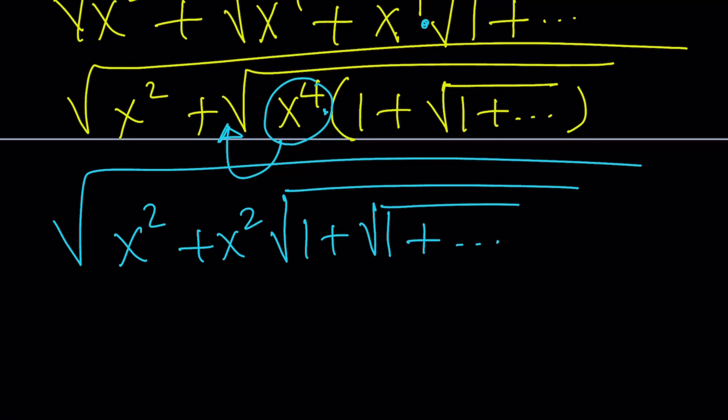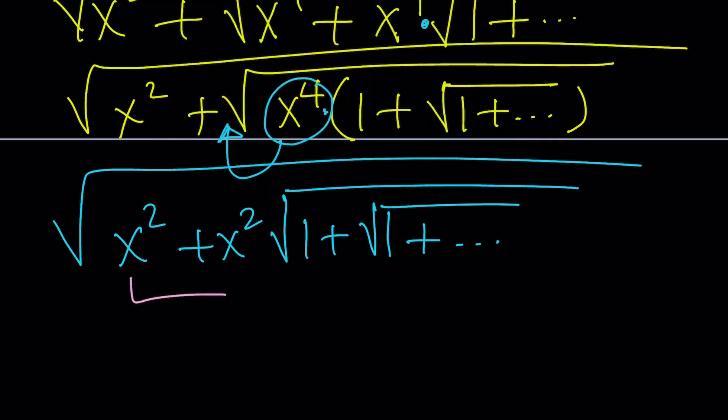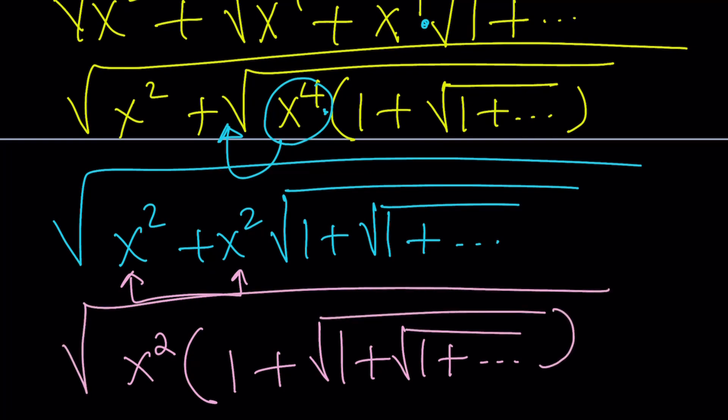So this is what we have so far. And what do you notice? The more you do this, the more common factors you're getting. So we can go ahead and now factor out x squared. If we do, then we're going to get the following. 1 plus 1 times this whole thing. So it's going to be the square root of 1 plus the square root of 1 plus dot, dot, dot. So on and so forth. And of course, there is still a radical on the outside. What's left? The last x squared.